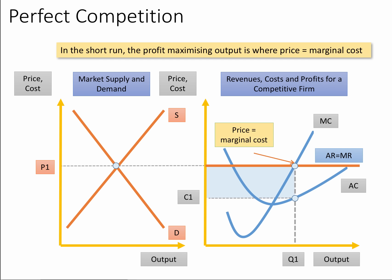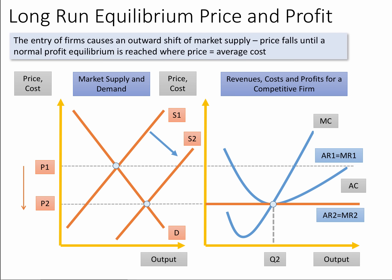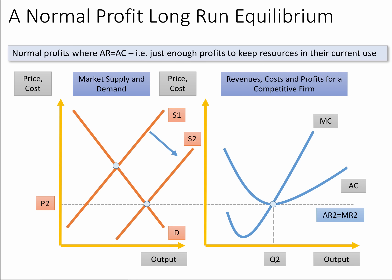Perfect competition sits at one extreme of the market structures spectrum. Here's the short run diagram of a firm making supernormal returns in the short run equilibrium — the market price is P1, sufficient for the firm to output Q1 and make a supernormal return. But in the long run, if firms are making supernormal profits, new firms come into the market. That causes an outward shift of market supply, the market price tends to fall until a new equilibrium is reached at normal profit where price equals average cost at output Q2. This equilibrium allows firms to make just enough profit to keep resources in their current use.